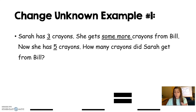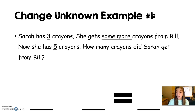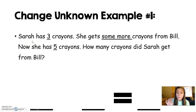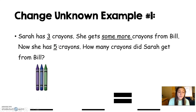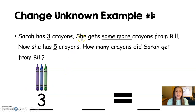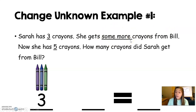Whenever you see a change unknown word problem, the first thing I want you to do — like we do with every word problem — is we make a number sentence. In order to do this, we want to read our problem very slowly, going through it piece by piece. Sarah has three crayons. How many crayons does Sarah have? Three. We know that Sarah has three crayons, and that's the first part of our number sentence — that's what we start with.